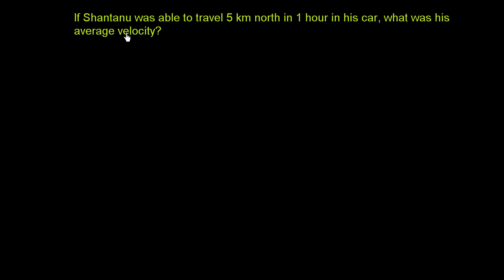So first I have, if Chantanu was able to travel 5 kilometers north in one hour in his car, what was his average velocity? Let's just review a little bit about what we know about vectors and scalars. So they're giving us that he was able to travel 5 kilometers to the north.